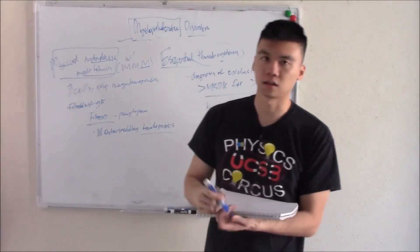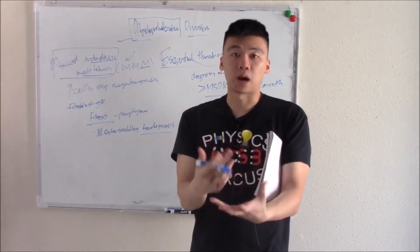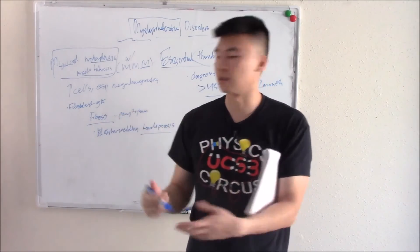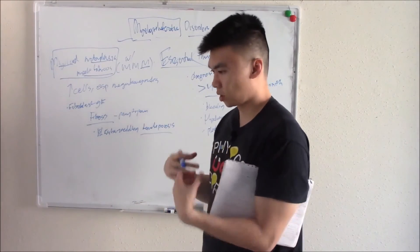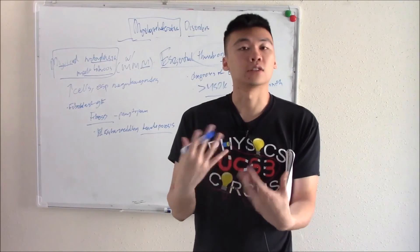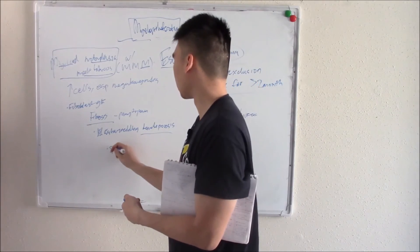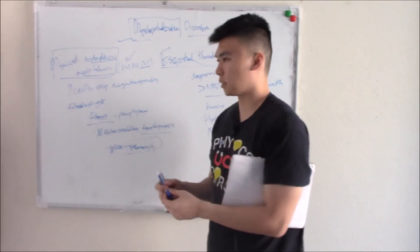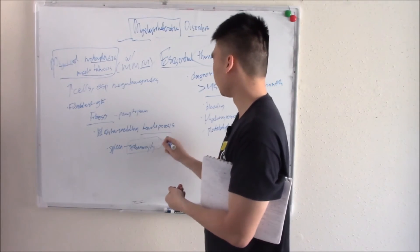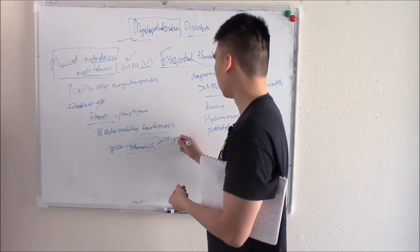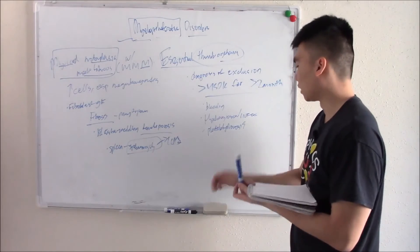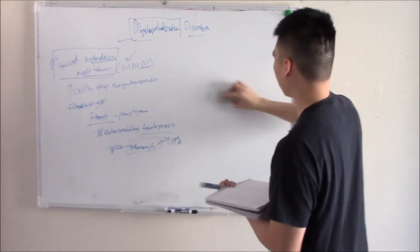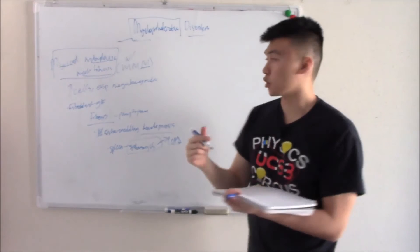Extramedullary hematopoiesis can occur everywhere — in your liver, your spleen, your serosal surfaces. This shouldn't surprise you because when you're an embryo, those are your first sites of blood production. Your body senses the loss and the spleen and liver wake back up to start making blood on their own. One of the most common sites is going to be your spleen, so splenomegaly is common. In fact, one of the most common causes of splenomegaly in an older patient is myelofibrosis. With that you get left upper quadrant pain where your spleen is.